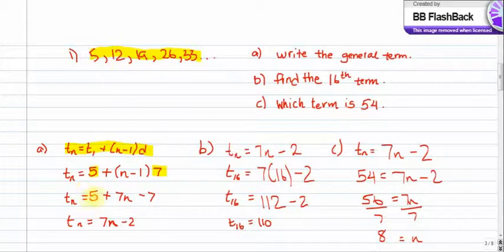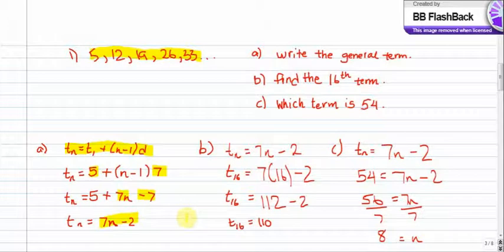Now let's multiply it out. So 5 remains the same, 7 times N gives us 7N, and 7 times negative 1 gives us negative 7. When we add like terms, we get a final answer of 7N minus 2. So that's our general term equation for this question.